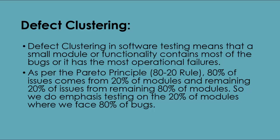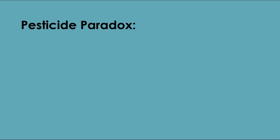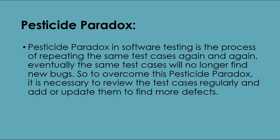Defect clustering: defect clustering in software testing means that a small module of functionality contains most of the bugs, or has the most operational failures. As per the Pareto principle, 80% of issues come from 20% of modules, and the remaining 20% of issues come from the remaining 80% of modules. So we emphasize testing on the 20% of modules where we face 80% of the bugs.